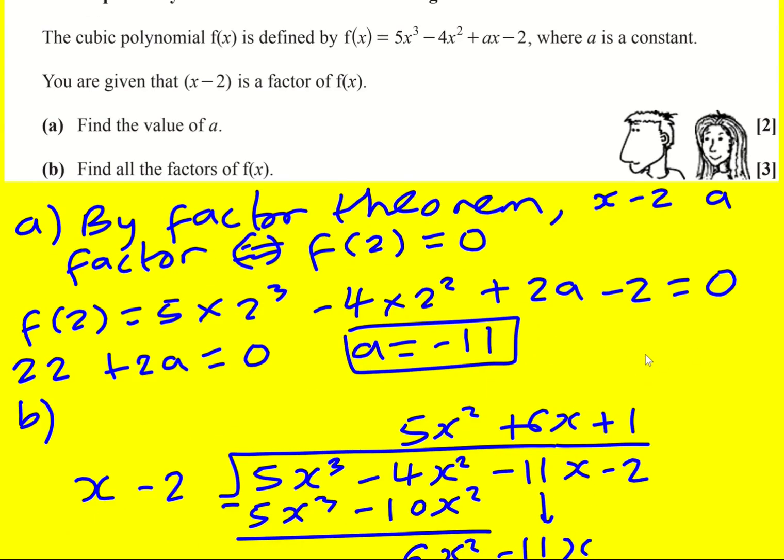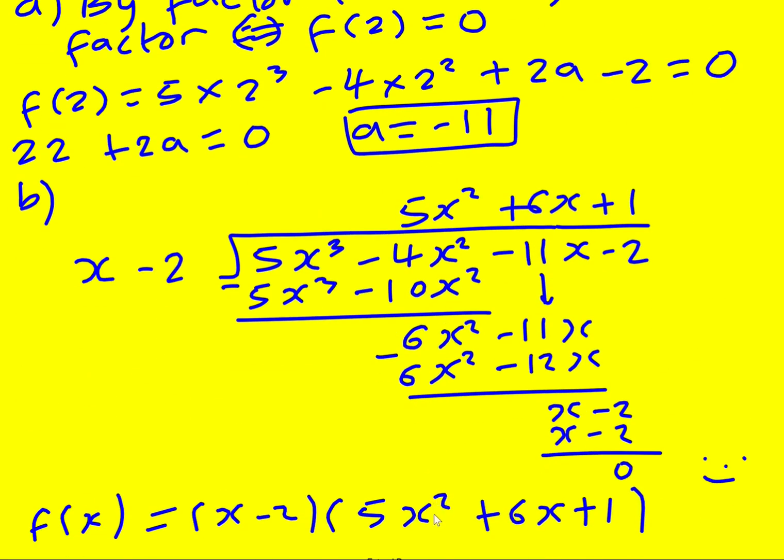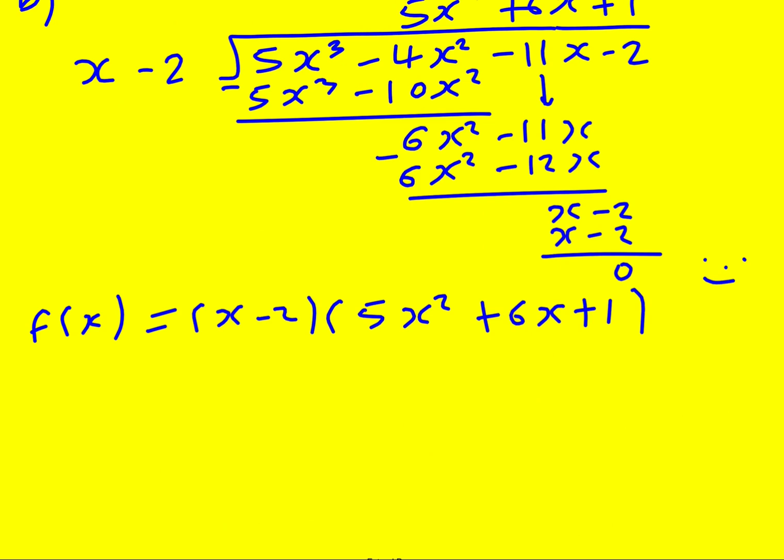And we're asked for all the factors - that's implying the linear factors - so I just need to factorize this bracket. Well, it's got to be 5x and x. I just do it sort of like trial and error for this sort of question. Actually, this is a very nice one because it's also got to be one and one, and it's got to be plus and plus, so actually that's the only thing it could be to give 5x squared and the one. And you can just check it - you get 5x plus x, you're going to get the 6x out of it.